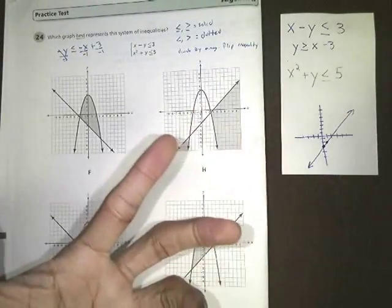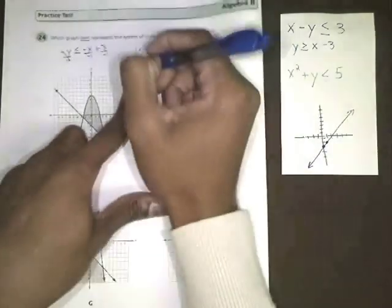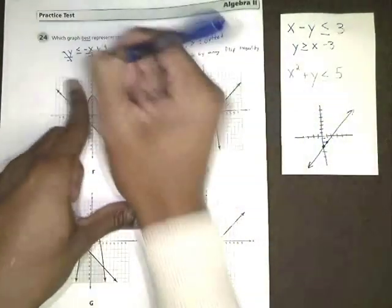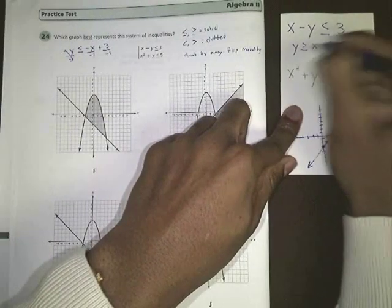A trick that you can kind of use is you can plug in the ordered pair 0, 0 and see what kind of a statement you get. If I plugged in 0 for my x and my y, I would end up getting 0 is greater than or equal to negative 3.